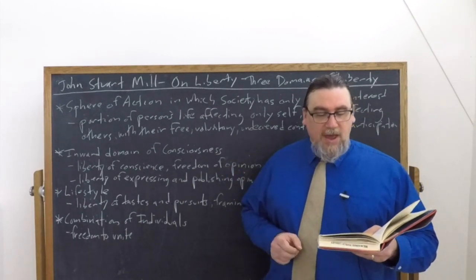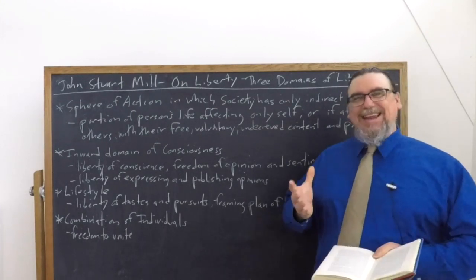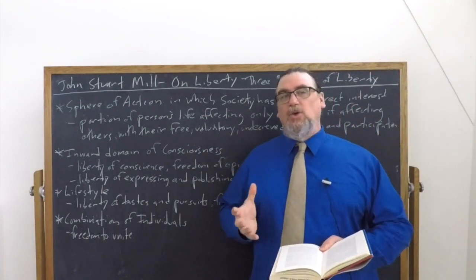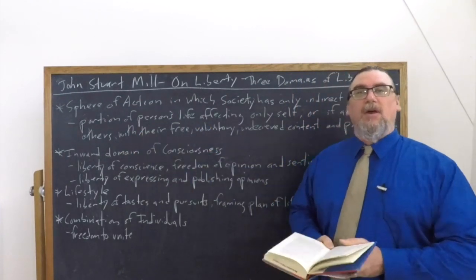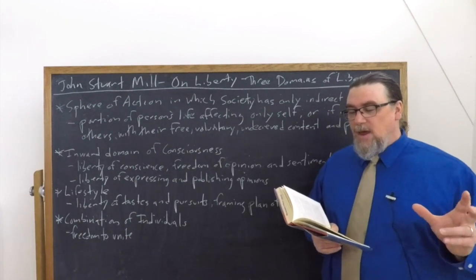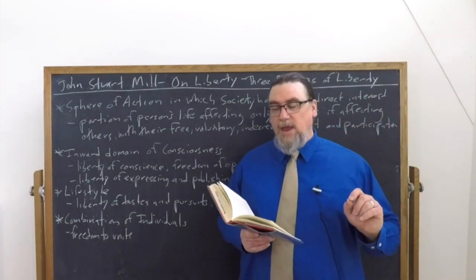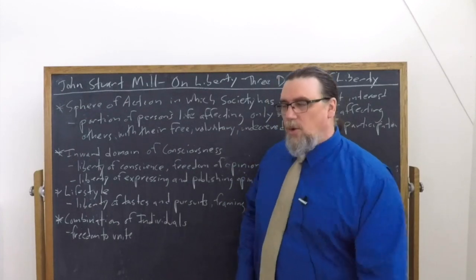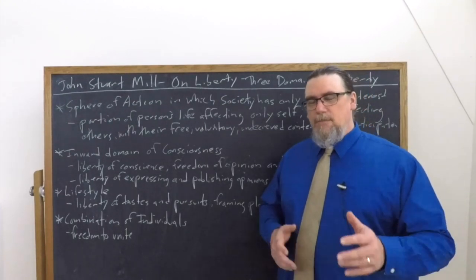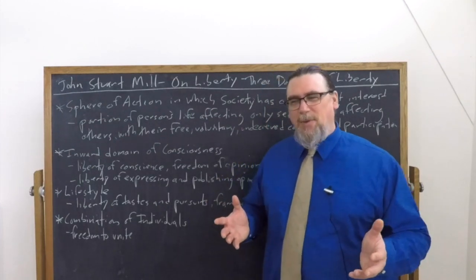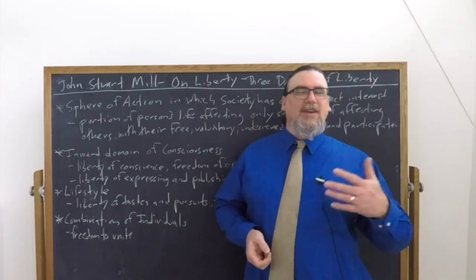The third thing he says is that there's also a liberty within the same limits of combination among individuals: getting together with others into associations, into groups, into organizations, joining organizations that already exist, founding new ones. He calls this the freedom to unite for any purpose not involving harm to others. The persons combining being supposed to be of full age and not forced or deceived. So we probably would have to exclude some things from that. For example, many multi-level marketing associations that people would join where they're not quite sure what they're getting into and it's been sold to them in a deceptive way.